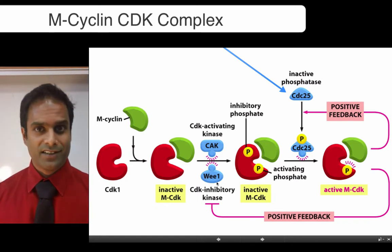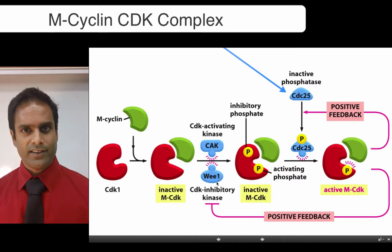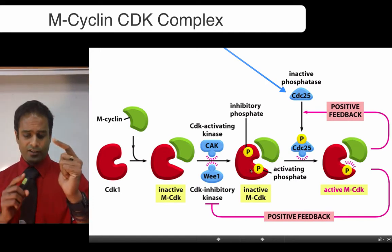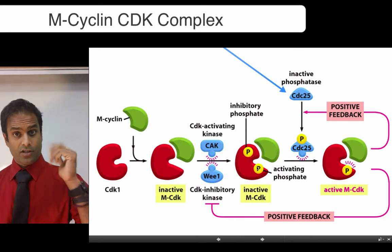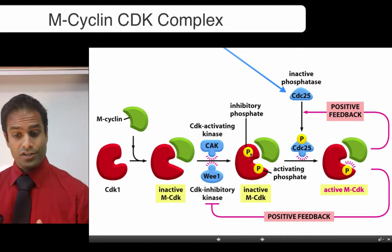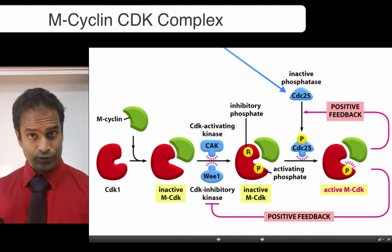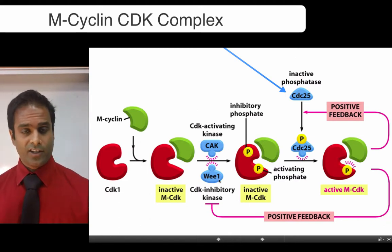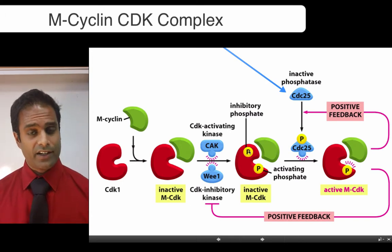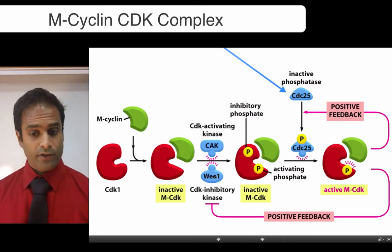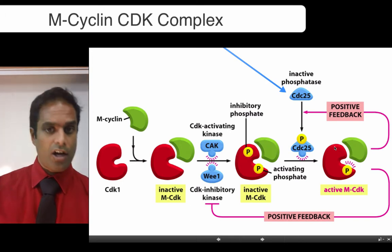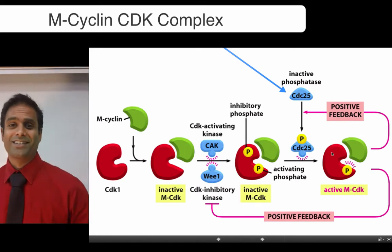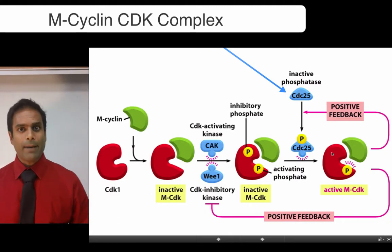Let's simplify that: m cyclin has an on switch and an off switch. You need to turn on the on switch and then turn off the off switch. CAK is the on switch, which we turn on. Wee1 is the off switch — phosphorylation of that area turns it off. That off switch then needs to be turned off, which is done by CDC25, resulting in an active m cyclin CDK conformation.